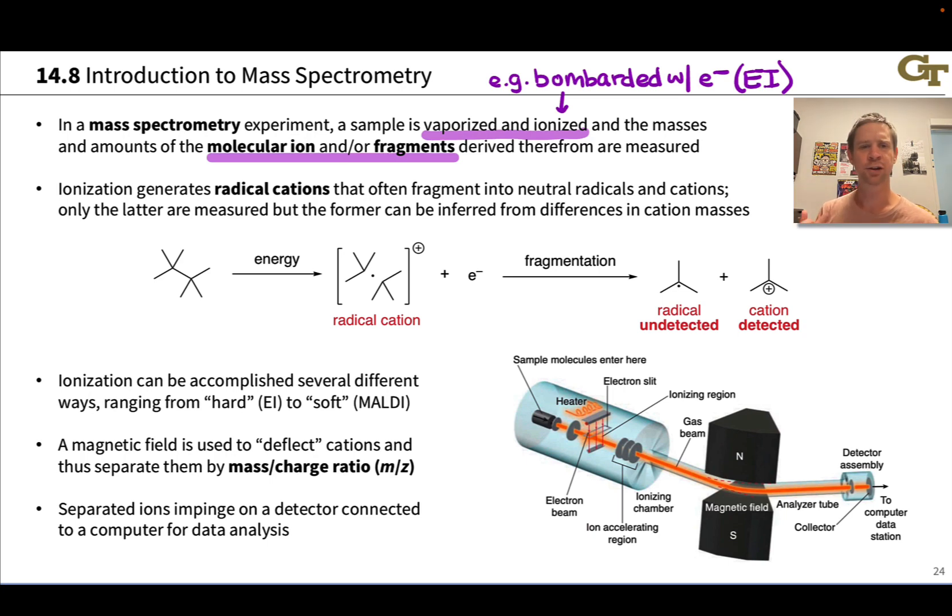Ionization generates these radical cations. They often fragment into neutral radicals and smaller cations, and only those smaller cations are actually detected.